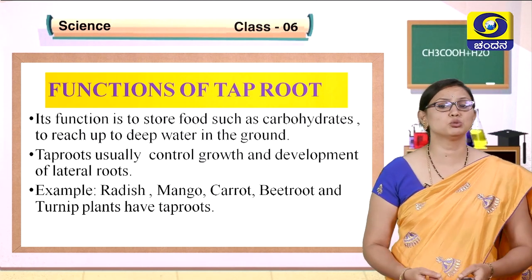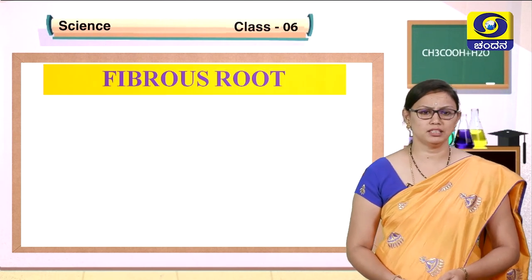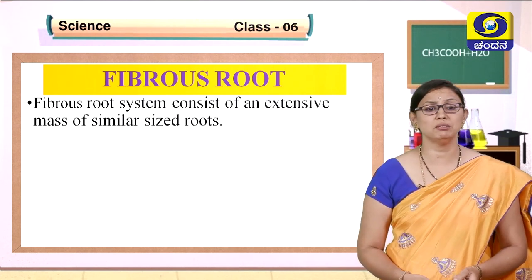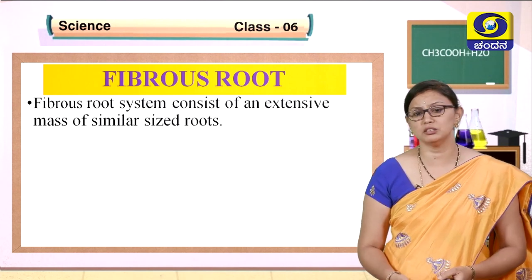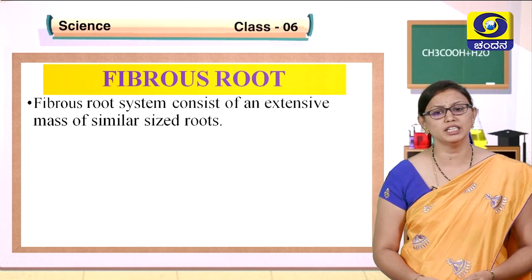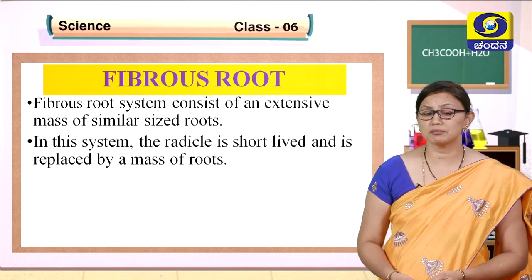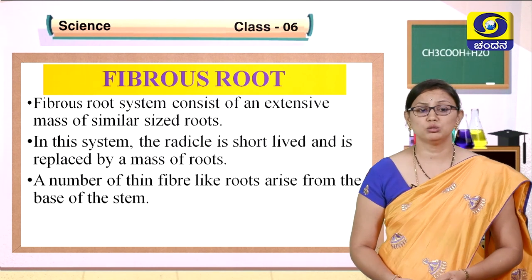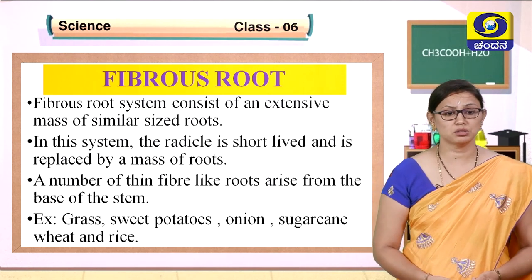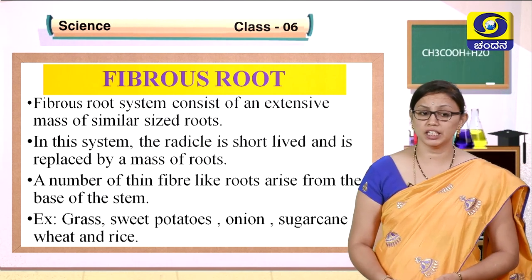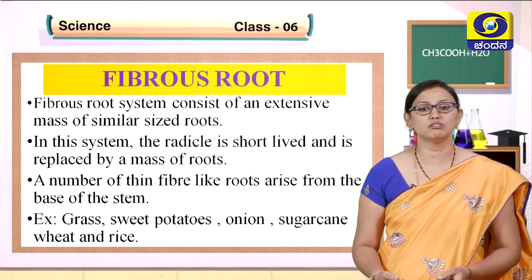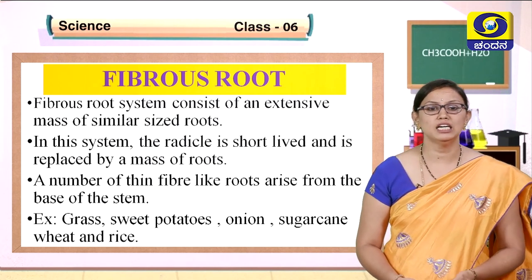The tap root mainly helps to store carbohydrates. Now we will look at fibrous roots. The fibrous root system consists of an extensive mass of similar-sized roots — you cannot differentiate between lateral roots and primary roots as in the tap root. It is a cluster of roots. In this system, the radicle is short-lived and is replaced by a mass of thin fiber-like roots that arise from the base of the stem.